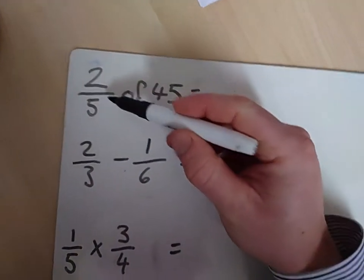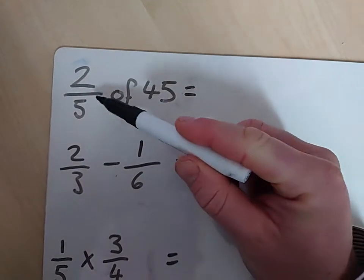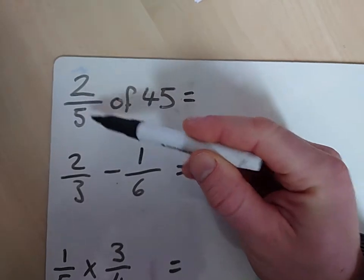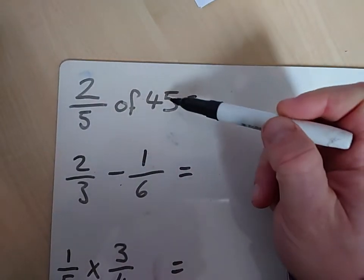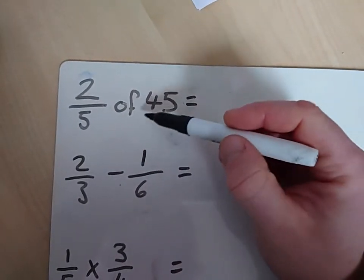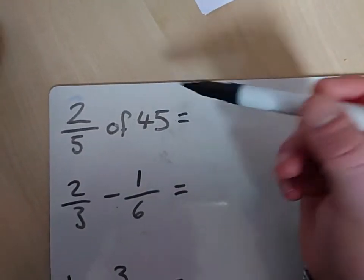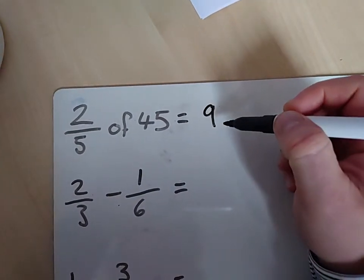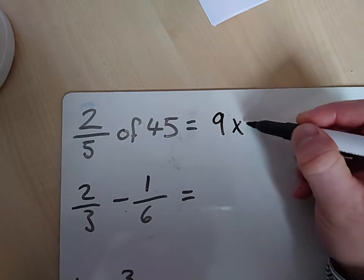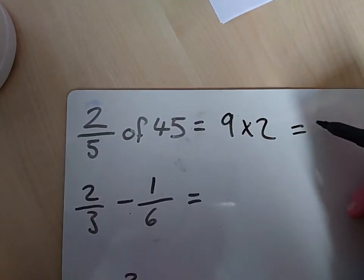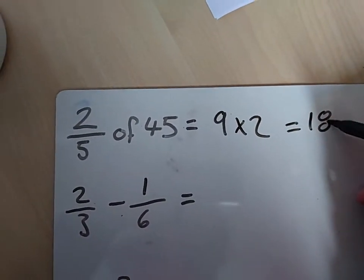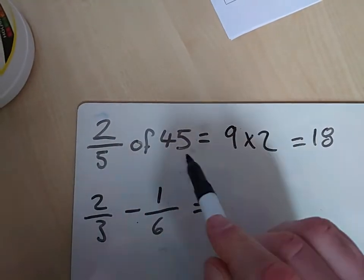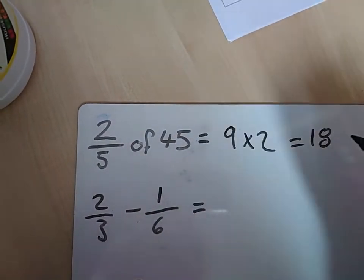So remember, if you have a fraction of a number, the bottom number just means we split it into 5, and then the top number means how many of those 5 we want. So the short way of doing that is you divide by the bottom number and times by the top number. So if I split 45 into 5, I'd end up with 9. But I want 2 of those, so I need to times it by 2. Divide by the bottom times by 2 to get the answer: 18. So 2 fifths of 45, divided by 5 to get to 9, and then times it by 2 to get to 18.